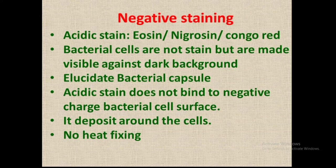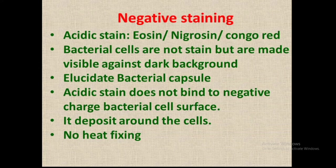Next is negative staining, which is totally opposite to simple staining. In negative staining, the bacterial cells are not stained. In simple or monochrome staining, bacterial cells are colored. But in negative staining, bacterial cells are visible under a dark background as colorless cells. The purpose of negative staining is to elucidate the bacterial capsule and outer membrane.